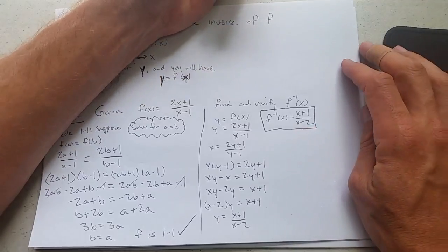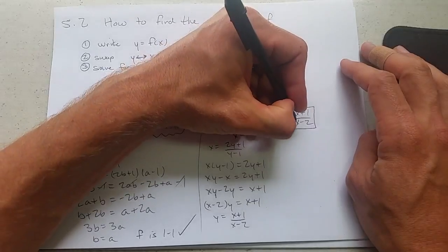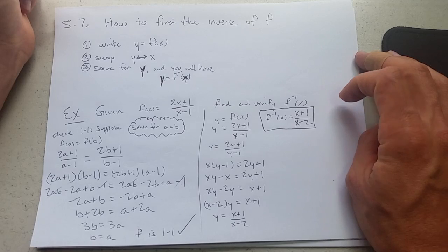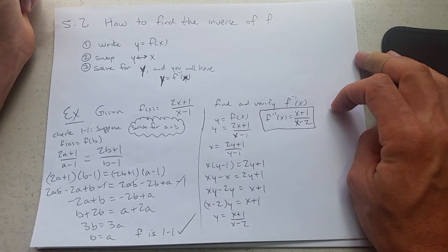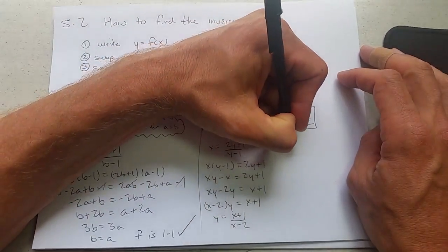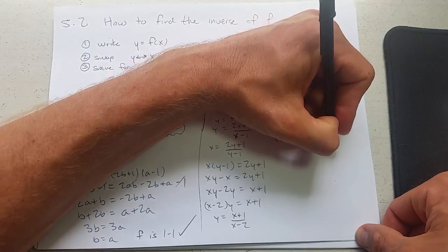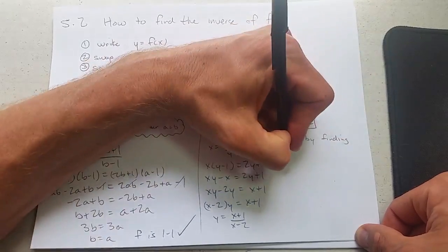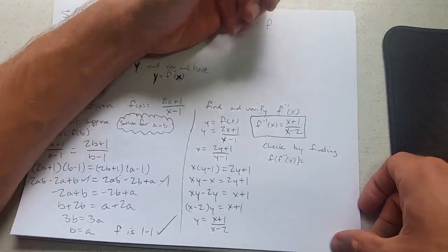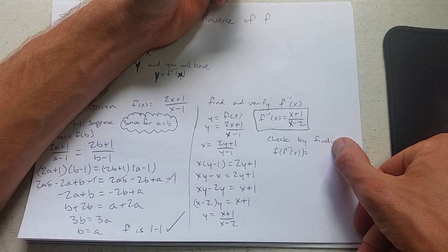So we think we found f inverse. We followed the procedure, hopefully didn't make mistakes. How do we know if this is correct? What we're going to do is go back to function composition. I'm going to compose f f inverse.